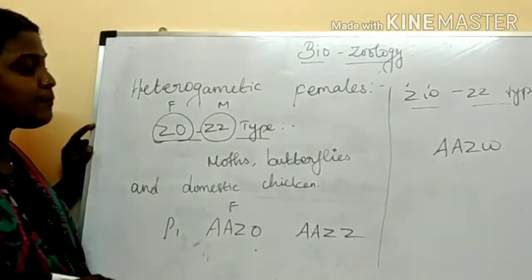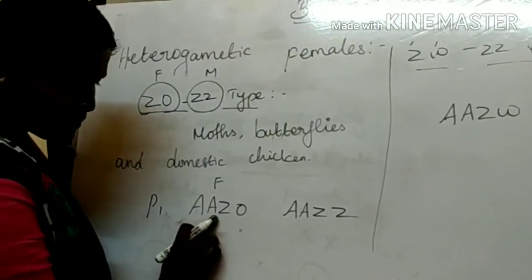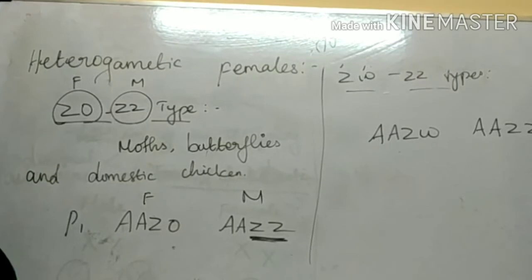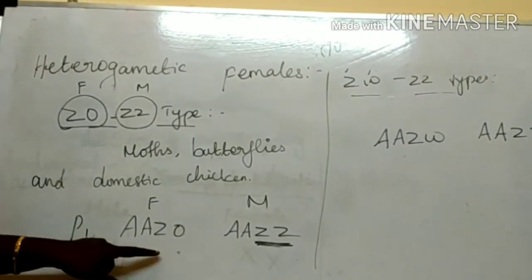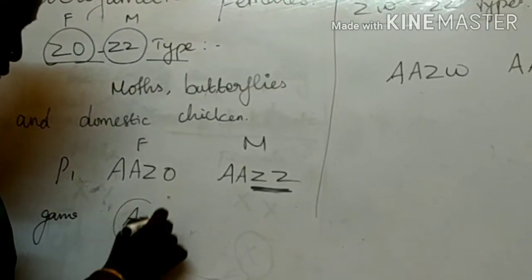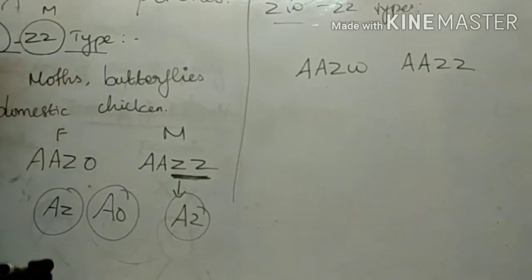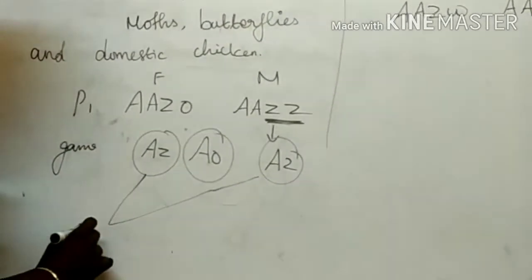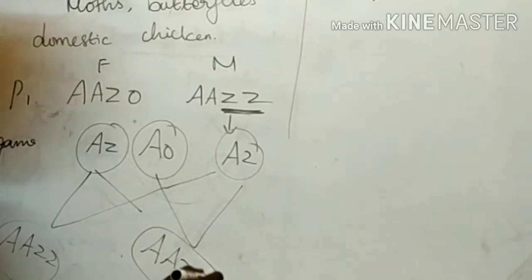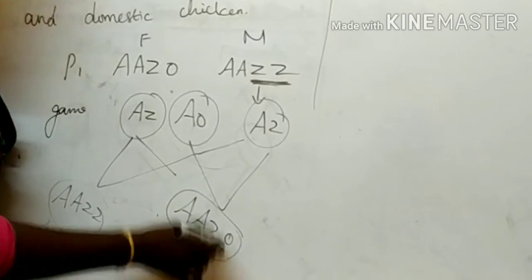Now we draw the diagram. The parent female is heterogametic (ZO) and the male is homozygous (ZZ). The gametes from the female are Z and O, while the homozygous male produces only one type of gamete. The offspring are ZZ type (male) and ZO type, which is the heterogametic female.